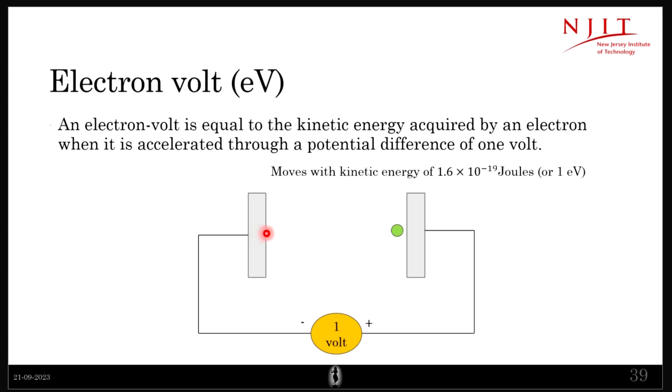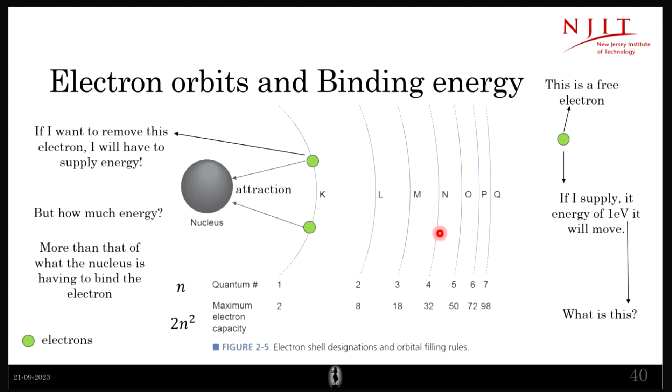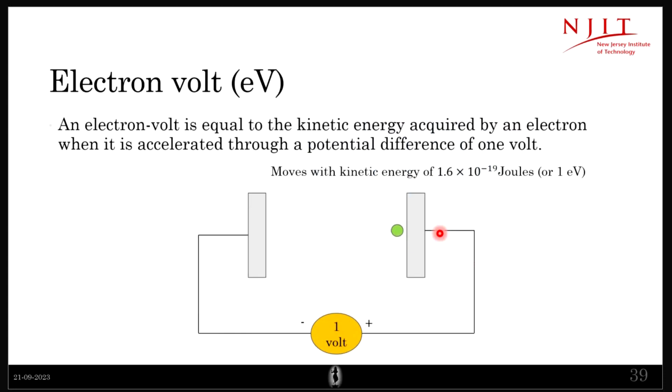The electron will move with a kinetic energy of 1.6 into 10 raised to minus 19 joules. Okay, so this is what we call electron volt. So it is basically the energy that an electron gets when one volt potential difference is applied across it. Everybody okay with this? Okay, so the beauty of this will be evident in some time.